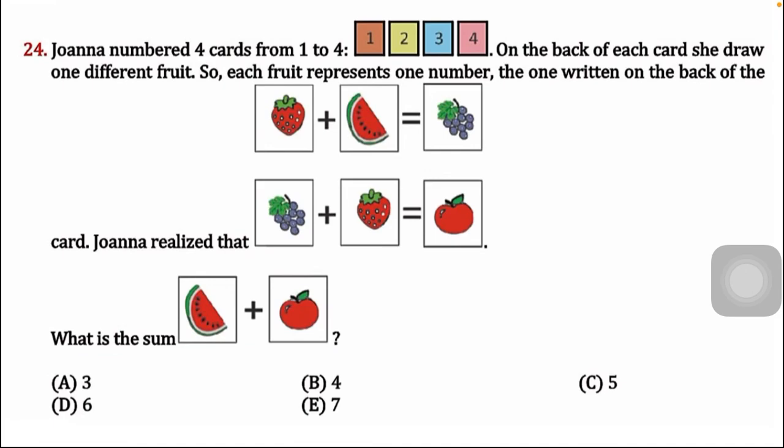What we are going to find is: what is the sum of watermelon plus apple? The options given are: A) 3, B) 4, C) 5, D) 6, E) 7.